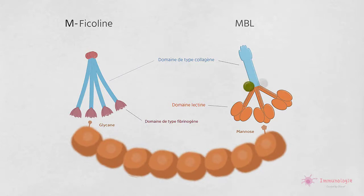La MBL et les ficolines s'associent à des protéines appelées MASP. Il existe actuellement trois MASP identifiés,